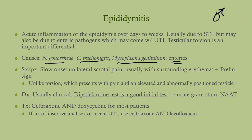Epididymitis presents as slow-onset unilateral scrotal pain. You may see surrounding erythema and warmth on the affected side — use the dorsum of your hand to feel temperature differences. You can also see the prehn sign: if you elevate the affected testicle, you may get a little relief from the pain. Unlike torsion, which presents with pain in an elevated and abnormally positioned testicle, the testicle position in epididymitis will be normal. Diagnosis is usually clinical, but you can get a dipstick urine test showing positive leukocyte esterase, urine gram stain for chlamydia and gonorrhea, and NAAT for Mycoplasma genitalium.